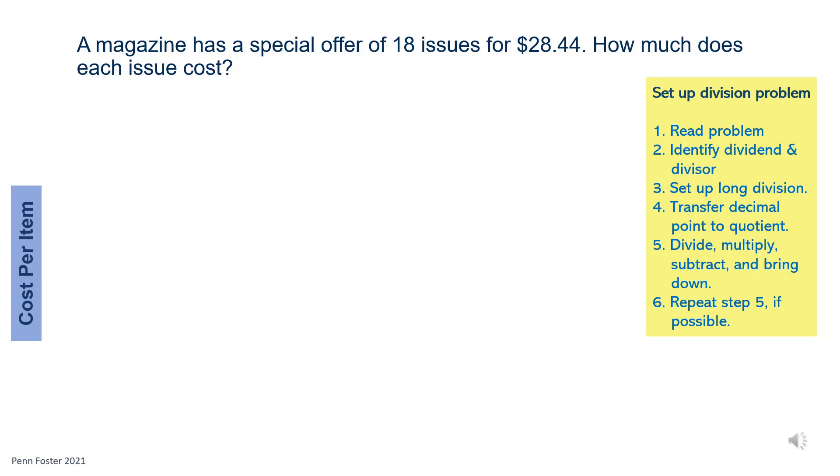Let's paraphrase the question. The magazines are on sale. Every 18 issues cost $28.44. Our task is to calculate the cost of one issue in this offer deal. If 18 costs that much, then divide the cost over 18 to find out the cost for one. Therefore, the cost is the dividend and the count is the divisor. To set up a long division, the dividend is placed inside or under the division sign and the divisor on the outside.